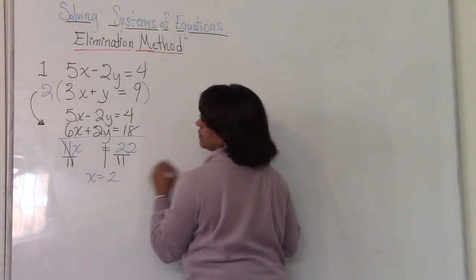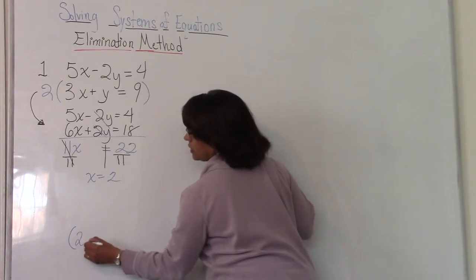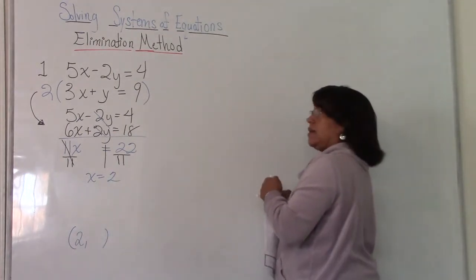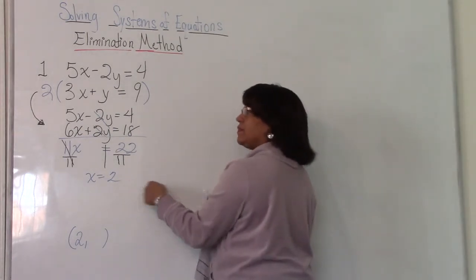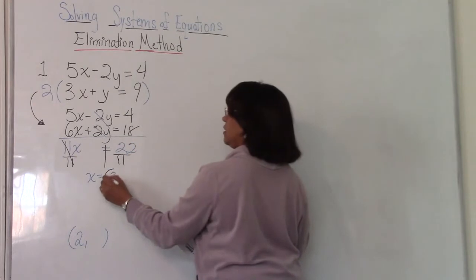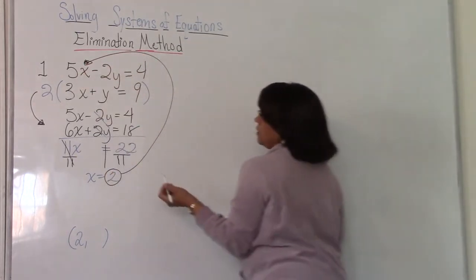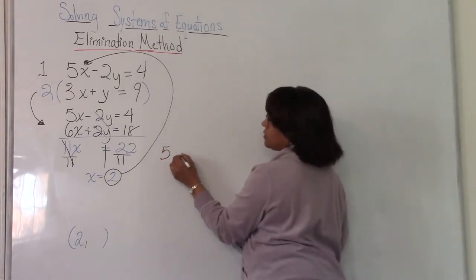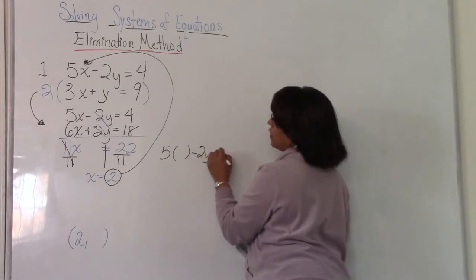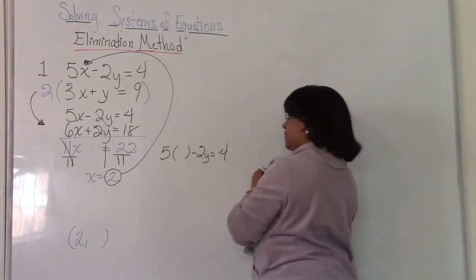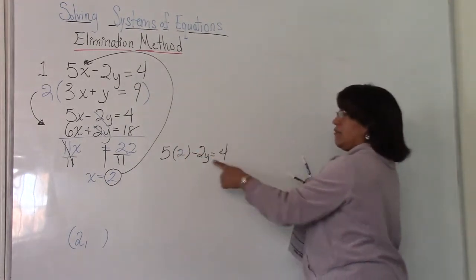Are we done? Nope, not done. Right. Because now we need to determine what y is because we have an ordered pair here that we try to figure out. So what will you do with this x equals 2? Good. You'll plug it into one of your original equations for x and that will help you to find y. So we can use that one. 5 times x but x is going to be 2 minus 2y equals 4. So I've just rewritten that equation but I left an empty spot where x is so we can plug in our 2.